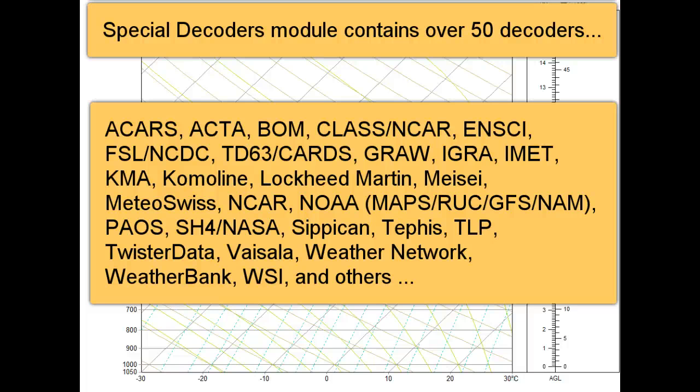These decoders are continually updated as formats change, and new decoders are added to this module each year. So if you have sounding data which RAOB cannot decode, just send a sample to Environmental Research Services for evaluation.